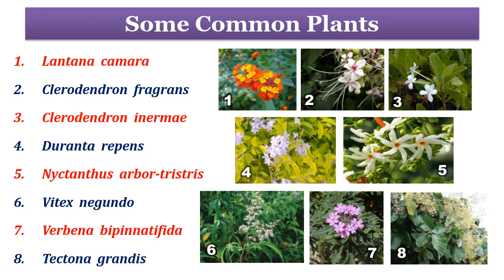These are some of the common plants which belong to Family Verbenaceae — you can correlate the image and the name given by serial number. The first image belongs to Lantana camara, which is a very common weed. Second is Clerodendrum fragrans. Third is Clerodendrum inerme. Fourth is Duranta repens. Fifth is Nyctanthes arbor-tristis. Sixth is Vitex negundo. Seventh is Verbena bipinnatifida. And eighth is Tectona grandis. Some of these plants are very common and well known.